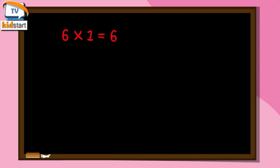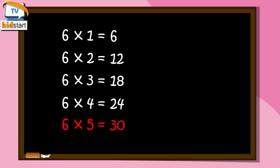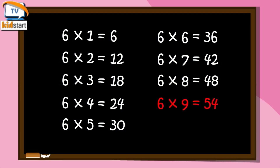Six ones are six. Six twos are twelve. Six threes are eighteen. Six fours are twenty-four. Six fives are thirty. Six sixes are thirty-six. Six sevens are forty-two. Six eights are forty-eight. Six nines are fifty-four. Six tens are sixty. Thank you.